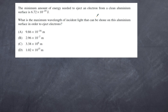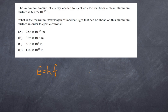The next question looks like a calculation but is quite easy without a calculator. The minimum energy needed to eject an electron from a clean aluminium surface is 6.72 × 10⁻¹⁹ joules. What is the maximum wavelength of incident light that can eject electrons? The formulas needed are E = hf, and c = fλ, where λ is what we want. Rearranging, frequency equals c over lambda.